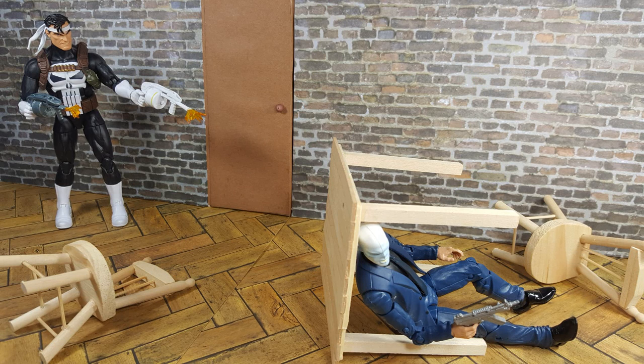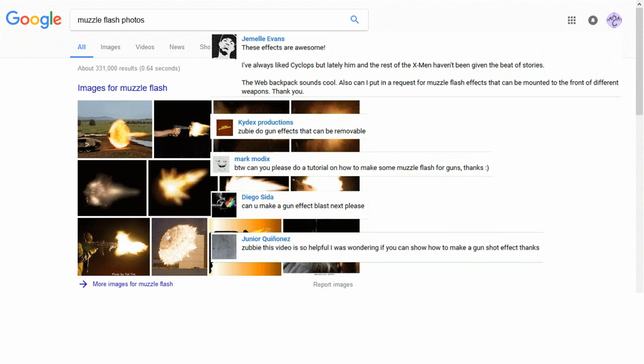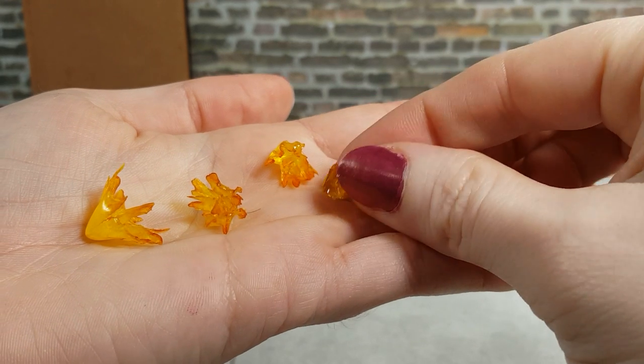A gun muzzle flash effect has been one of the most requested projects here, so we're going to make some today with a little bit of paint and some hot glue. This action figure effect can be scaled up or down to fit any size of figure.